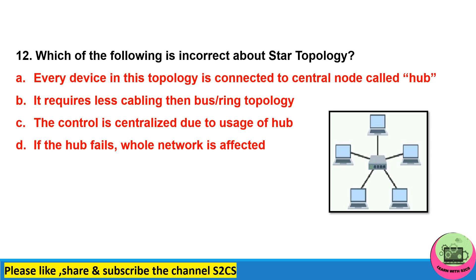Question 12: which of the following is incorrect about star topology? Every device in this topology is connected to a central node called a hub — correct. The control is centralized due to usage of the hub — correct. If the hub fails, the whole network is affected — true. So the incorrect statement is: it requires less cabling — no, it requires more cabling as compared to bus or ring topology.